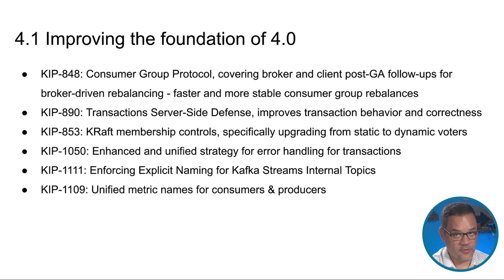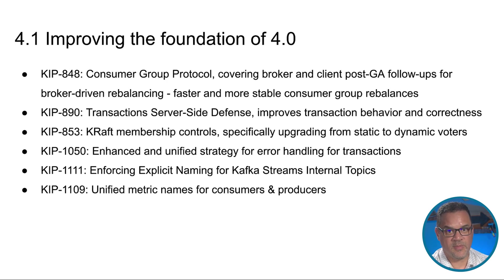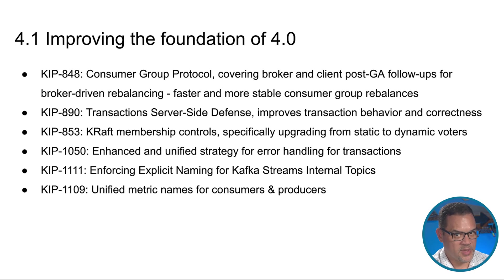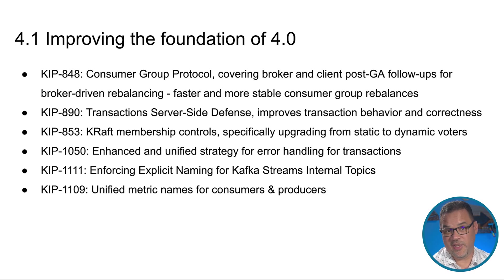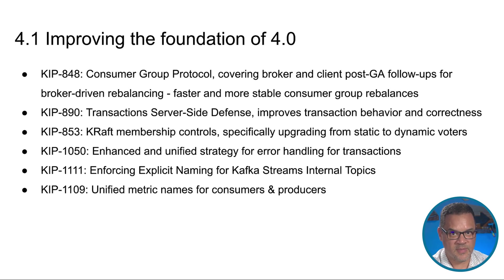KIP 1109 brings uniformity — dare I say sanity — to the naming convention of consumer topic metrics. Producers and consumers have used different naming conventions for topic names within their metrics. Specifically, consumers would replace the periods in a topic name with underscores when producing the metrics. This KIP is the first step towards clearing that confusion. New consumer metrics will be emitted alongside the existing ones, with those legacy consumer metrics being marked as deprecated. This should provide a smooth migration path, and these legacy metrics will likely be removed in a later release.